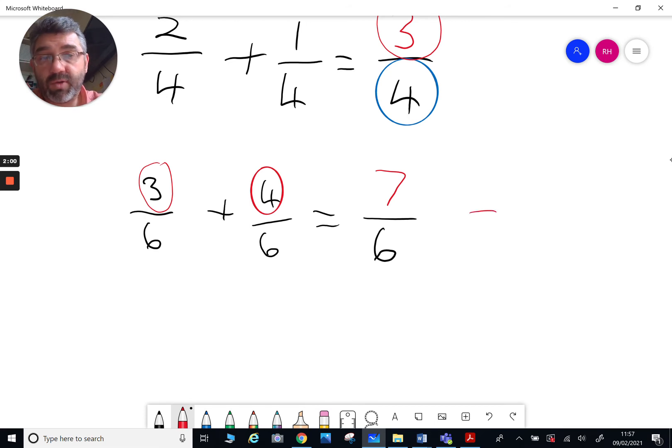Now if you wanted to go a step further and simplify this, we would divide the top number, seven, by the bottom number, six, which would give us how many times six goes in. We're going to say one, and what's left over, we'd have a remainder of one. So what we'd have then would be, the denominator is six, that hasn't changed.